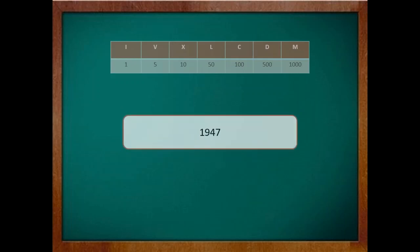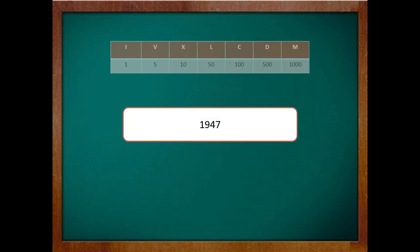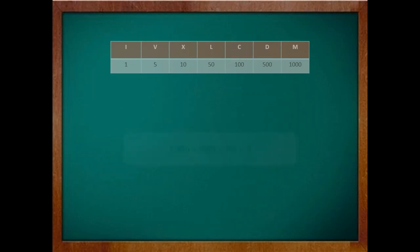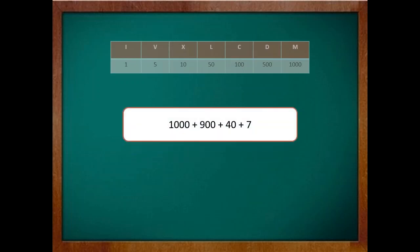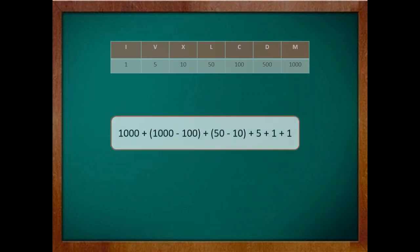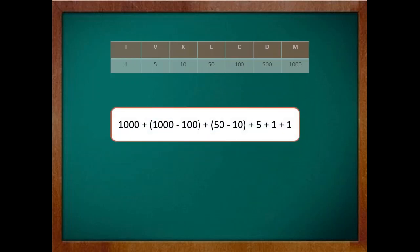Now let's take a more complex example 1947. 1947 can be written as 1000 plus 900 plus 40 plus 7 in its expanded form. Now remember the trick, 9 and 40 have to be written in terms of subtraction. So 900 can be written as 1000 minus 100 and 40 can be written as 50 minus 10.